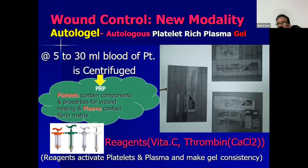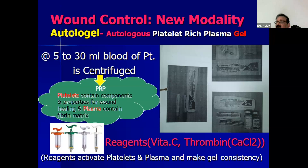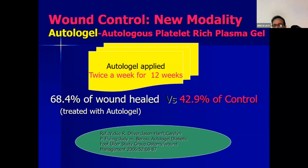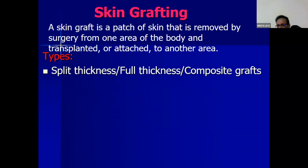Platelet-rich plasma gel application is being used in osteoarthritis, corneal conditions, and wound care. As we know, platelets contain components and properties for wound healing, and plasma contains fibrin matrix. In this procedure, around 5 to 30 ml of the patient's blood is taken and centrifuged after mixing certain reagents like vitamin C or thrombin, which activate platelets and plasma and make a gel consistency. This gel is then applied over the wound and has been found to be very effective in comparison to control management.